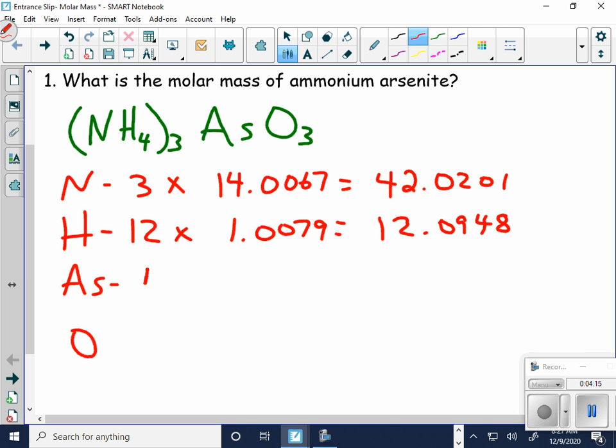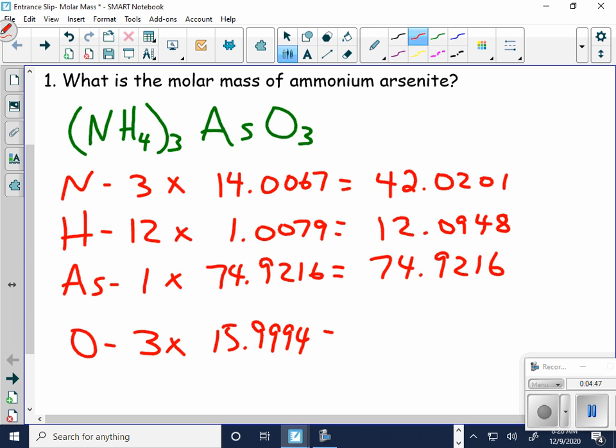Arsenic. I have one of those. Where's arsenic? There he is. Each arsenic is 74.9216. So that's 74.9216. Finally, oxygen. I have 3 oxygens. Each oxygen is 15.9994. So my oxygen is going to be 47.9982.